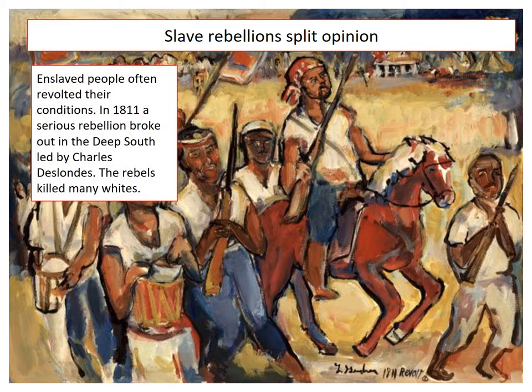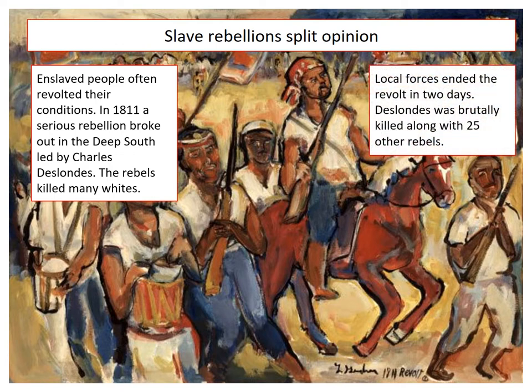The most famous example is in 1811, when a really serious rebellion broke out in the Deep South in Louisiana, led by a man called Charles des Londres, of which a portrait painting exists. The rebels themselves killed many white people in that rebellion. But local forces ended the revolt two days later, and Charles himself was really brutally killed along with 25 other rebel leaders.